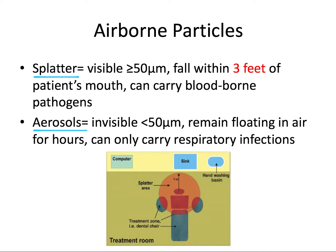Splatter, because it consists of visible liquid of a certain diameter, can carry blood-borne pathogens like hepatitis B, hepatitis C, and HIV that we talked about in the last video. Aerosols are invisible particles — these are less than 50 microns — and this also includes droplet nuclei, which are less than 5 microns. Because of their size, aerosols can remain floating in the air for hours, but they're only able to carry respiratory infections, such as tuberculosis or TB.